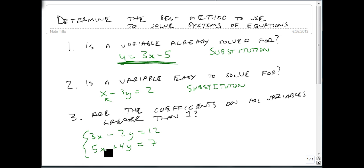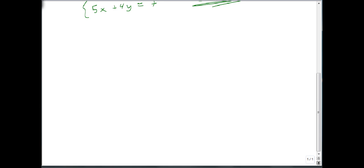If we have a setup like this, notice there's no easy variable to solve for—they're going to create fractions if we do it. If that's the case, then you want to use the elimination method. If none of these conditions are true, then you can pick the one you like. I tend to default to elimination as my default method. So let's just look at a couple of examples.